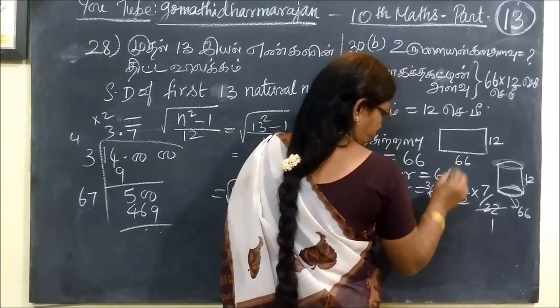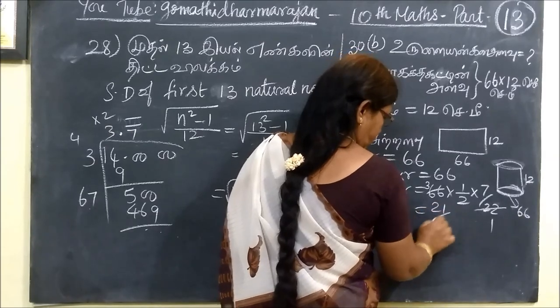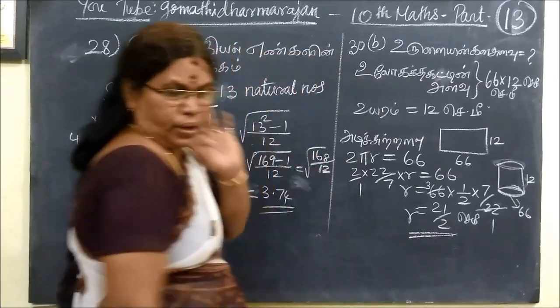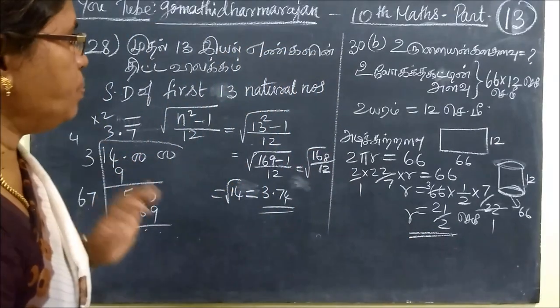This gives us 21 by 2. This is 6 times 6. Now you can calculate.